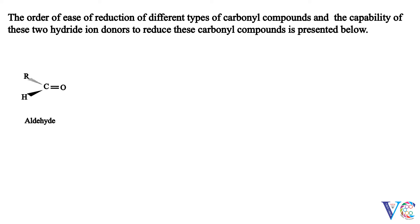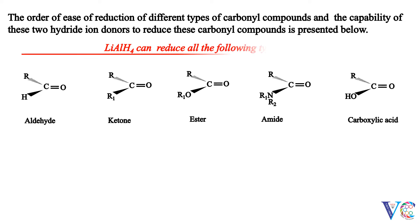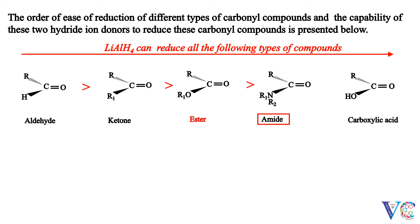Aldehyde, ketone, ester, amide, and carboxylic acid — lithium-aluminium hydride can reduce all these types of compounds. The order of ease of reduction is: aldehydes are more easily reduced than ketones; ketones are more easily reduced than esters; esters are more easily reduced than amides; while carboxylic acids are reduced with the least ease.